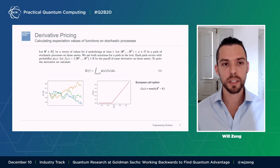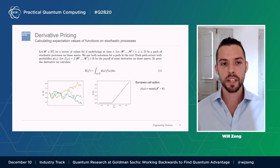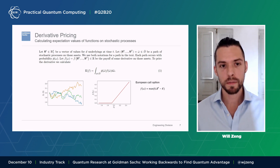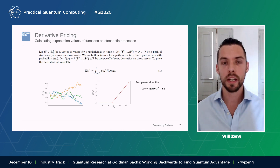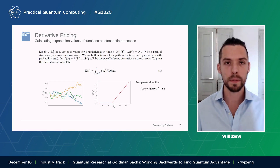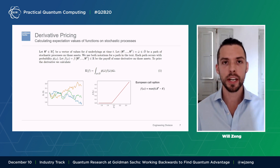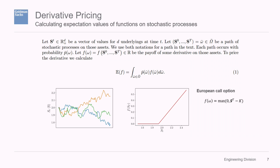What is derivative pricing? The mathematical core is calculating expectation values of functions of stochastic processes. You have some underlyings — which might be stock prices — that evolve through a stochastic process over time, and you can buy and sell contracts whose value depends on the eventual value of those underlying assets. A classic example is a European call option: there's some threshold value, and after some time you check if the underlying stock has exceeded it. If it hasn't, the contract is worth nothing; if it has, you achieve some linear payoff.